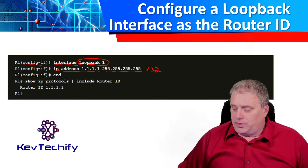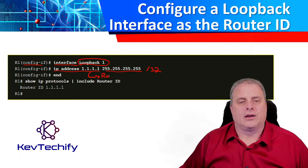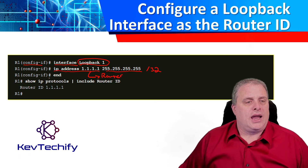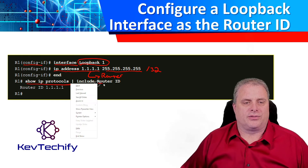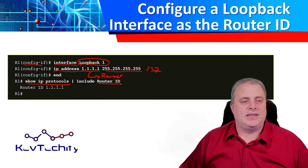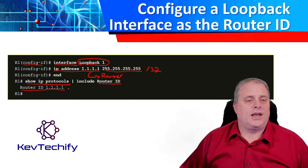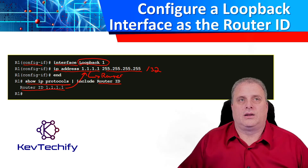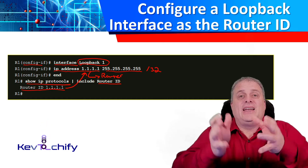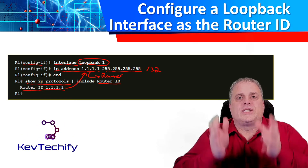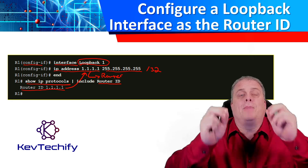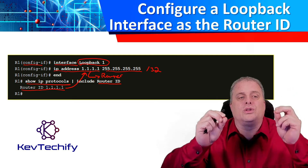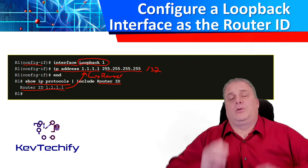Once we do that, this will now be our router ID. If we do a show IP protocols and filter by including router ID, it's going to show us that our router ID is now 1.1.1.1, which is the IP address we set up on that loopback. Note that OSPF does not need to be enabled on an interface for that interface to be chosen as the router ID — we don't have OSPF enabled on this loopback, but it will still use that loopback address as our router ID.